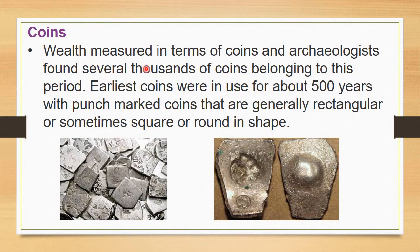Wealth was measured in terms of coins. The earliest coins were used for about 500 years — these are called punch-marked coins. They are generally rectangular in shape, and sometimes square or round in shape.